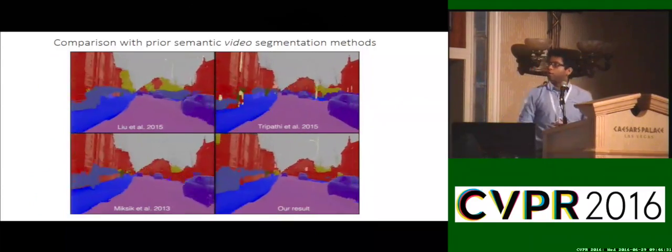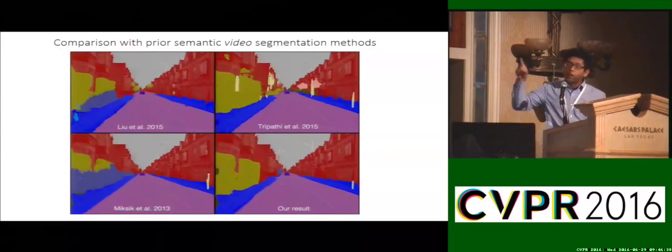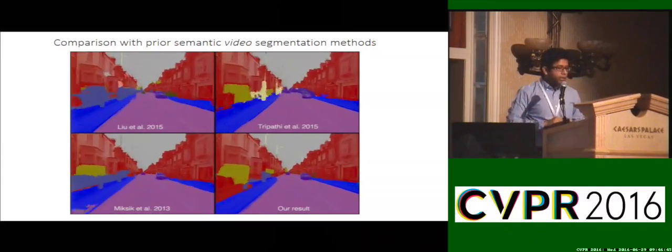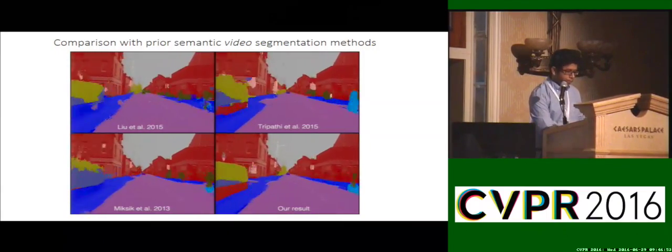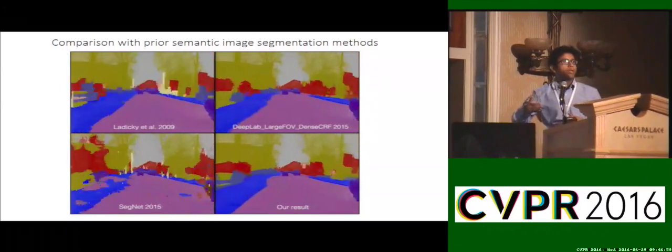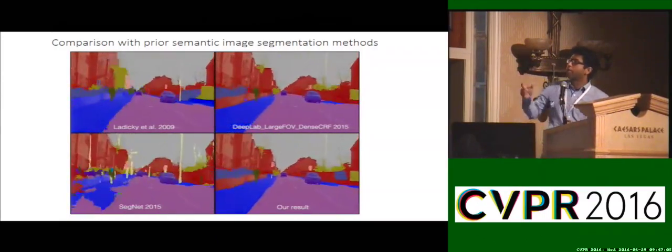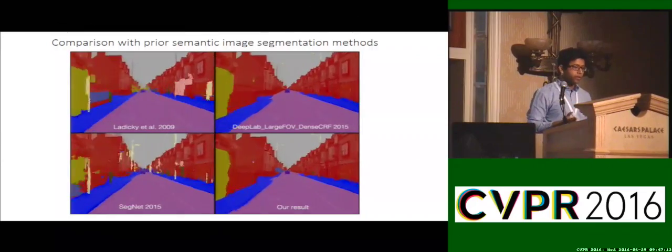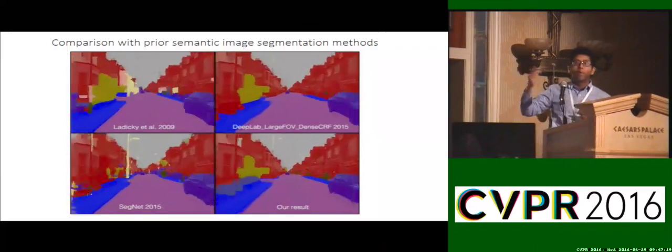This is how the results look visually. The bottom right corner is our result. One important thing to note is all these methods actually exploit video. They are all video semantic segmentation methods. As you can see, our method gives much more temporally consistent and accurate results compared to state-of-the-art methods. Even though we are optimizing over the whole video, we still preserve clean objects like lampposts.